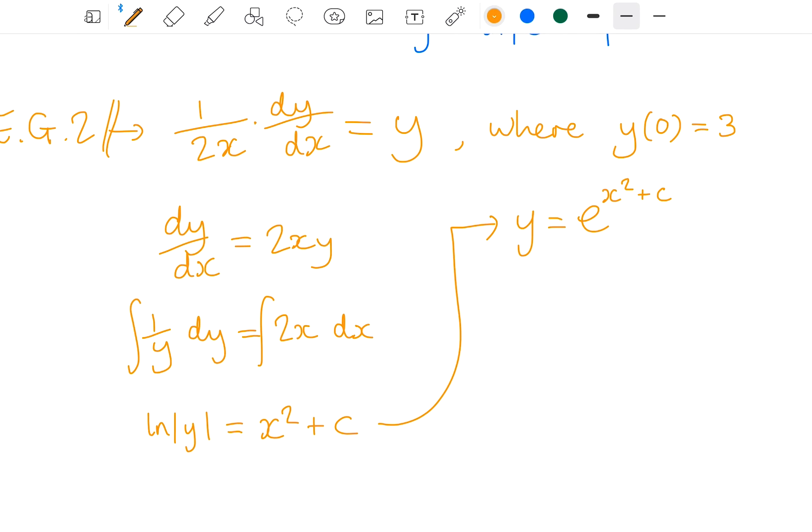Now, if I look at this exponent here, I can see that I've got e to the power of something plus something else. So I could separate these into two terms here, multiply it together.